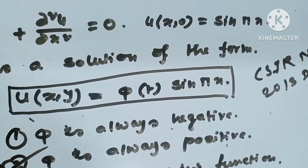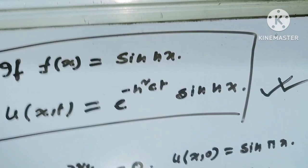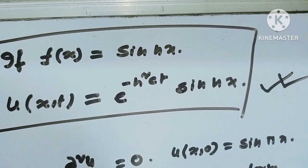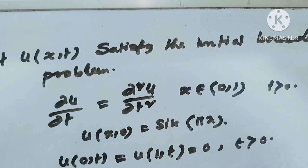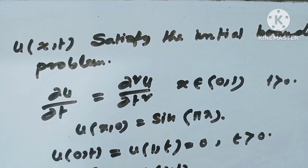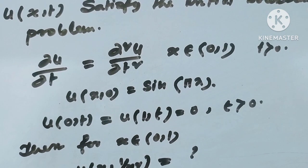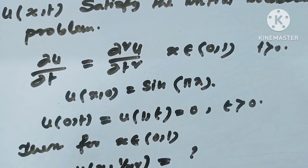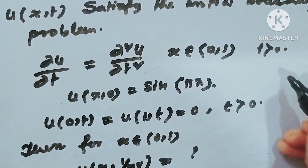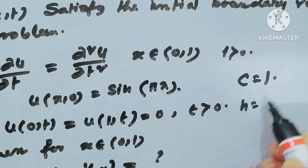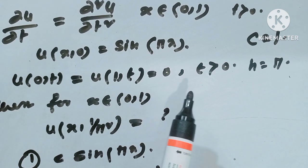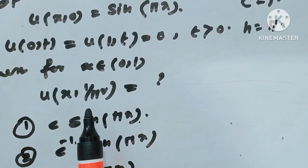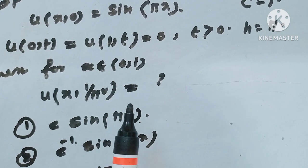If you know this equation, then you can solve any heat equation. Let u(x,t) satisfy the initial boundary problem: del u / del t = del²u / del x², for x in (0,1), with u(x,0) = sin(πx). Here c = 1 and n = π. Boundary conditions: u(0,t) = u(1,t) = 0 for t > 0. We have to find u(x, 1/π²).